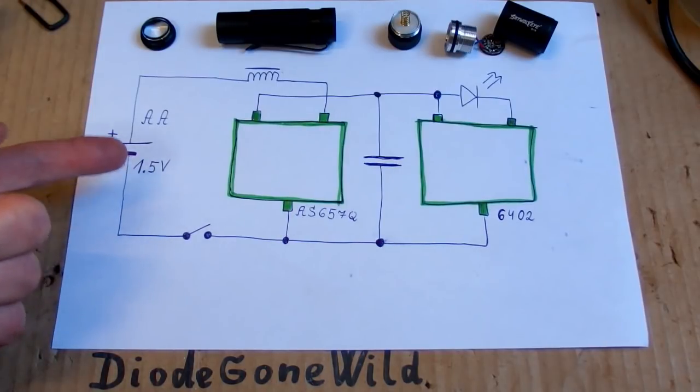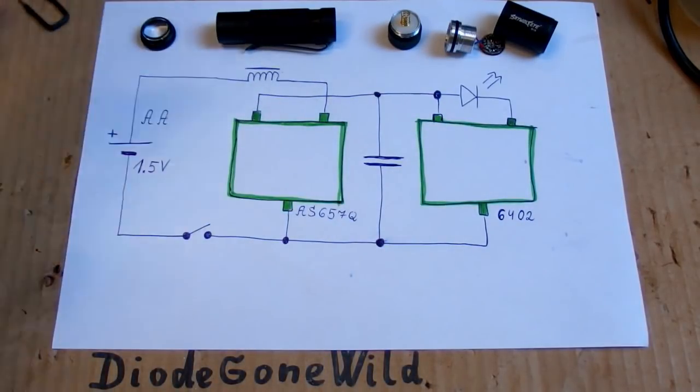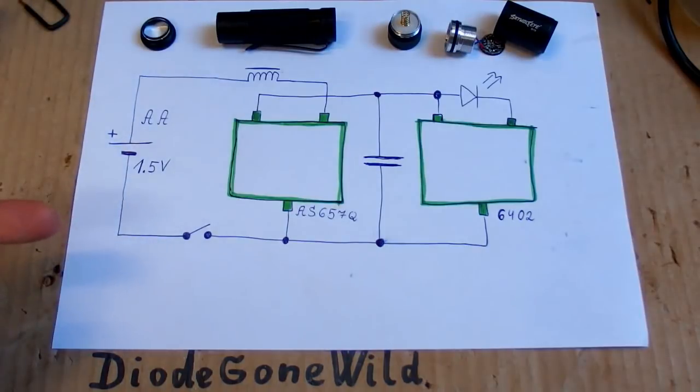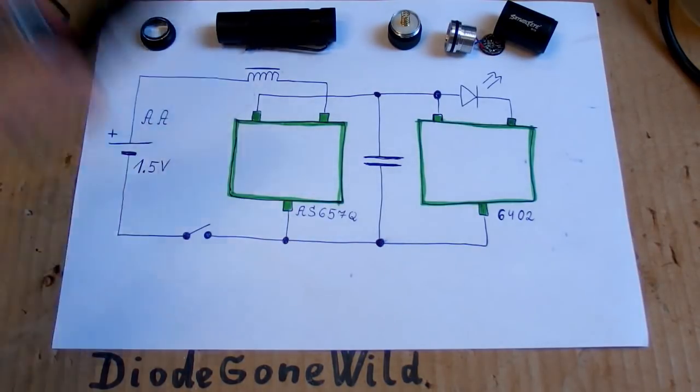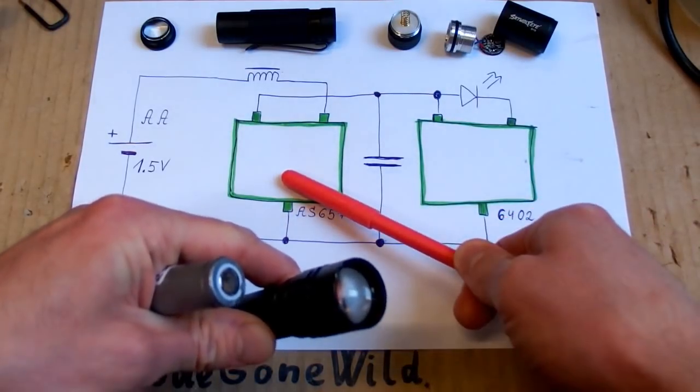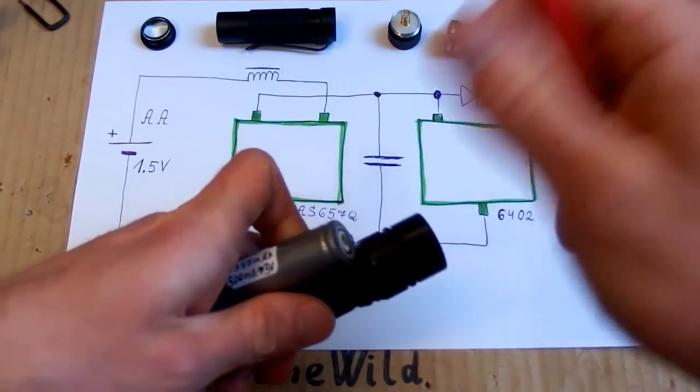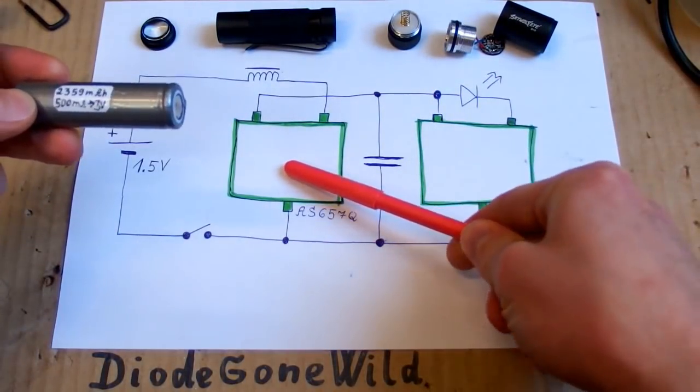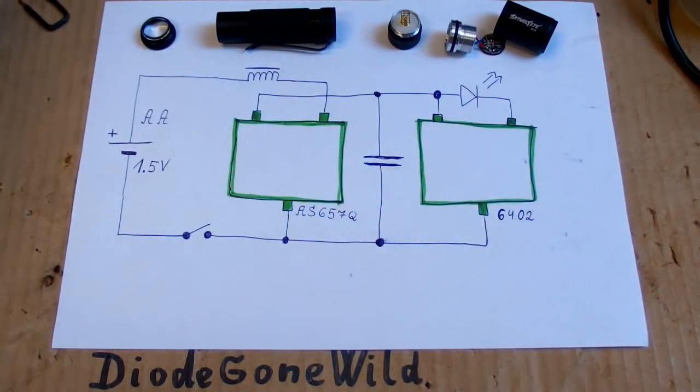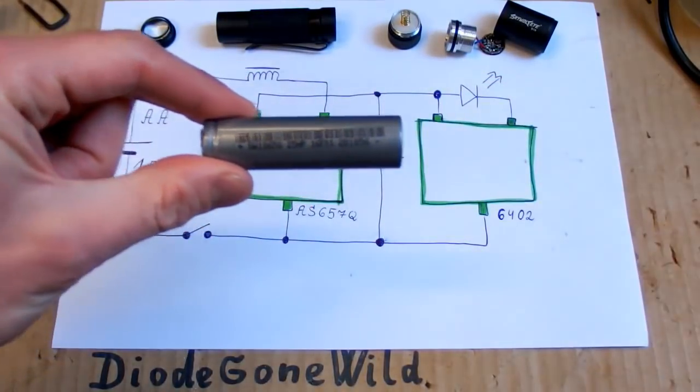But in other flashlights which run on a lithium ion battery, it's the other way sometimes. In those flashlights it goes into the mode controller first, and then into the current regulator if there is any. But in lithium ion battery flashlights it's not a boost converter actually, it's a buck converter or sometimes just a resistor, because the voltage drop of the LED is lower than the voltage of a lithium ion battery.